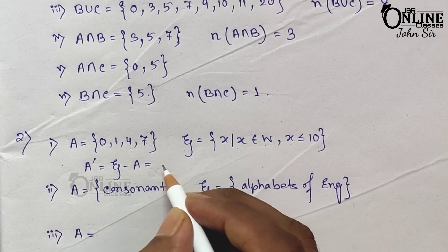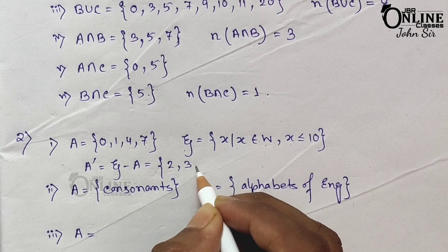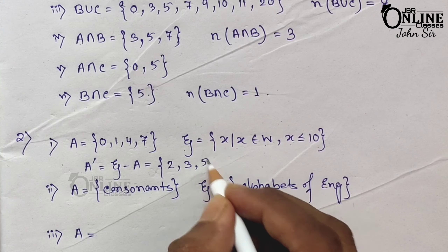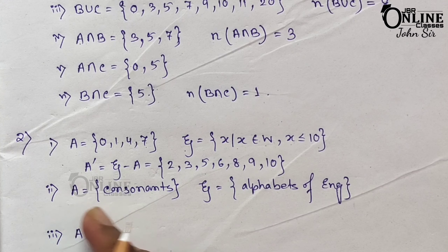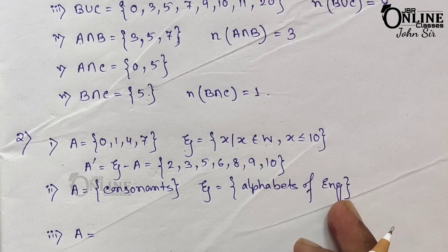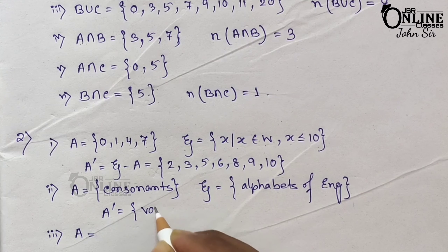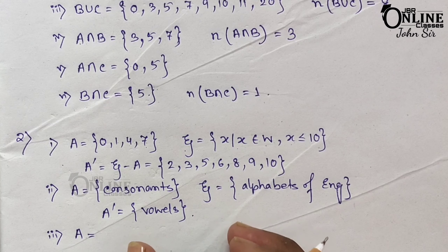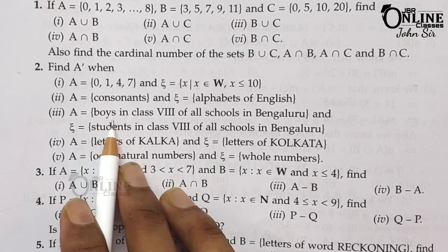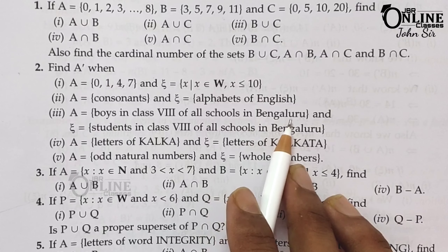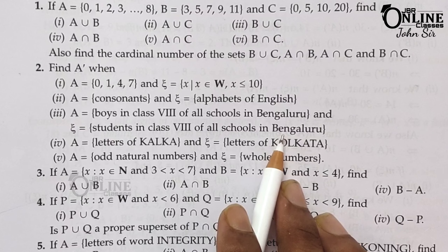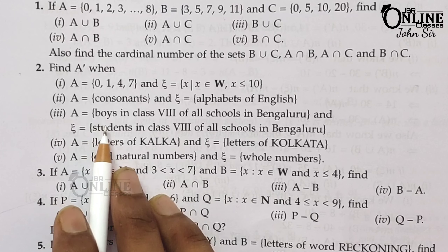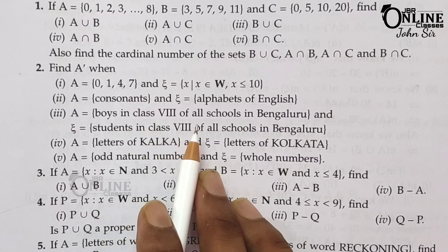So if you subtract 0, 1, 4, 7 from 0 to 10, then the remaining elements are 2, 3, 5, 6, 8, 9, and 10. Next, A equals consonants and Xi equals alphabets of English, so A complement equals the vowels — A, E, I, O, U. And if A equals boys in class 8 of all schools in Bengaluru and Xi equals students in class 8 of all schools in Bengaluru, then A complement will be girls in class 8 of all schools in Bengaluru.